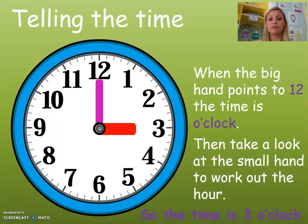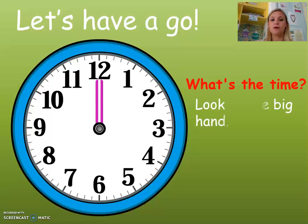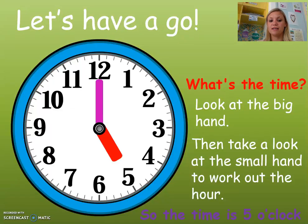And the hour hand, the small hand, is on the 3. So, 3 o'clock. Let's have another go. The big hand is on the 12, so we know it's o'clock. And the small hand is on the 5, therefore it is 5 o'clock.